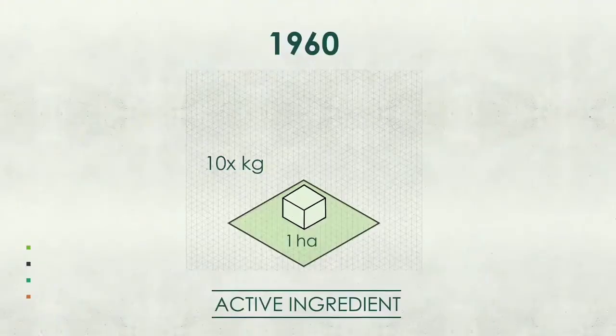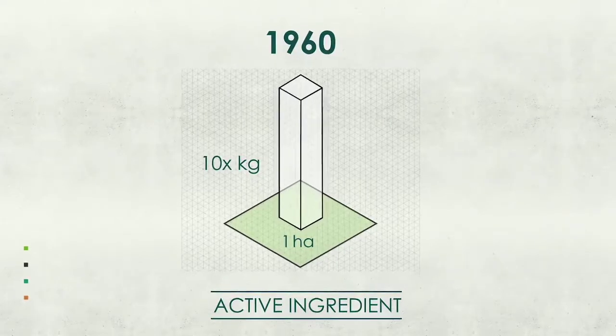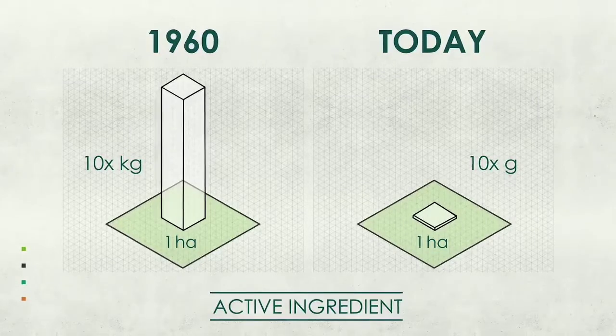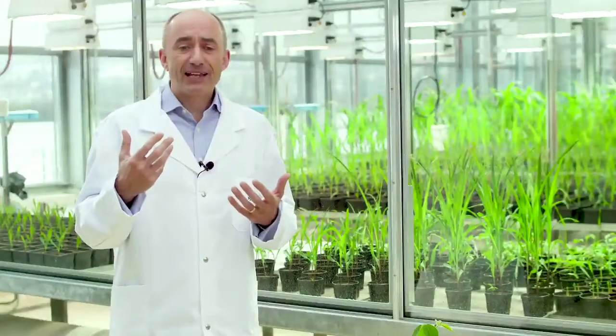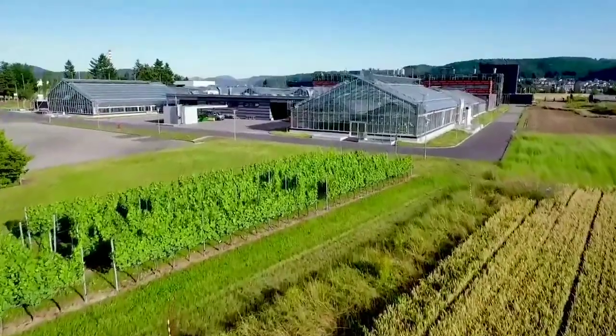This has had a huge benefit. Back in the 1960s there were tens of kilos of active ingredient being applied to a hectare of a field. Today it's tens of grams — it's minuscule — because of this precision. Over the last 30 years we've lost 30 percent of active ingredients globally, because they no longer work effectively or they no longer meet societal expectations.